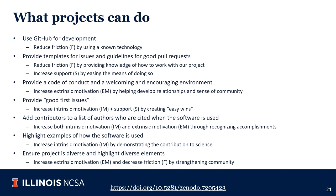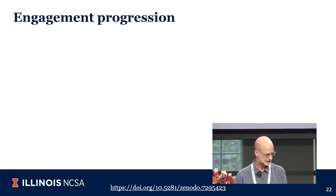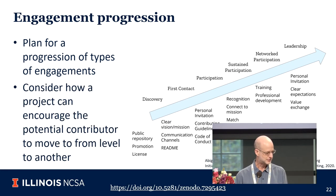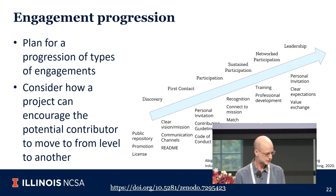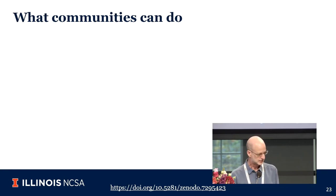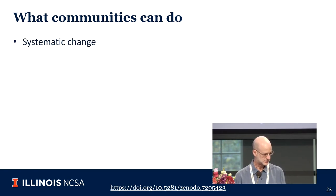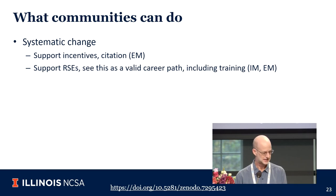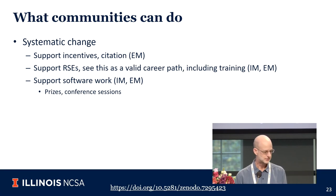There's a series of things projects can do, thought of as a plan of progression and engagement. There are a bunch of different points at which people come into a project, and at each point there are actions you can take to help them progress to the next step. These steps range from initial contact up to potentially becoming leaders of a project over time. Communities also have a number of things they can do, thinking about systematic change — supporting incentives and citation, supporting RSEs and seeing this as a valid career path, talking about this in community meetings and societies.